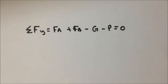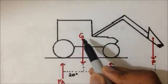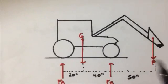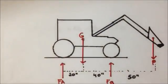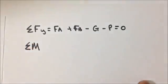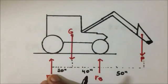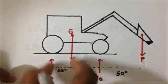Our second equation: we are going to calculate the moment about a pivot point. I will choose to calculate the moment generated about the center of gravity — you can choose any pivot point. We set the sum of moments equal to zero. FA has the tendency to generate a moment about the center of gravity in the clockwise direction, so it will be a positive moment, and it is 20 inches away from the center of gravity: 20 times FA.